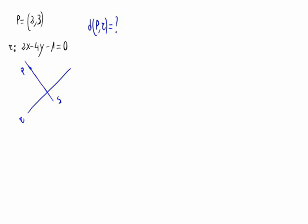So the distance from P to R is the distance to this point Q, and Q is the intersection point between R and S, the perpendicular to R.